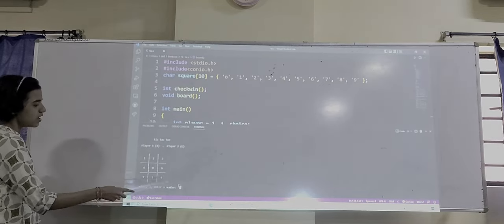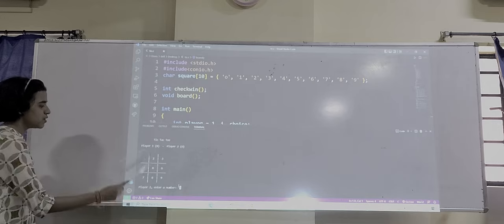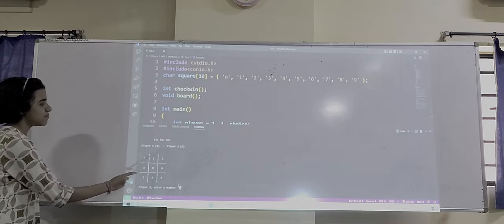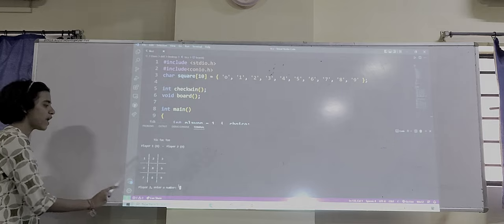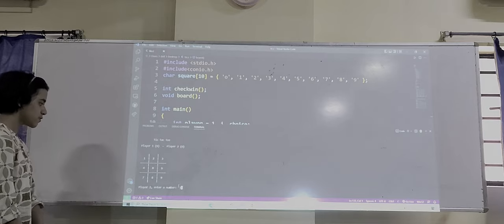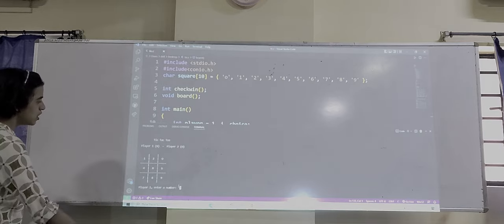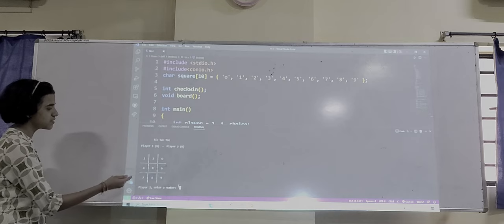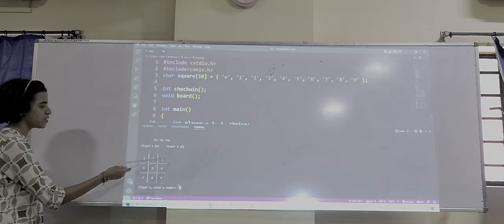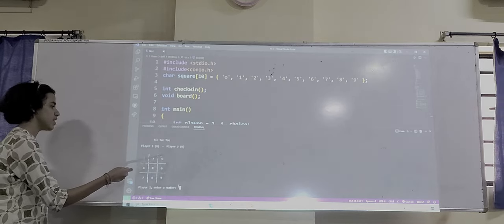Player 1 enters number 5. Player 1 has taken the mark X, so the X mark has been put in the 5th place. Player 2, enter a number. Player 2 enters number 3. The O has been put in the board at position 3.